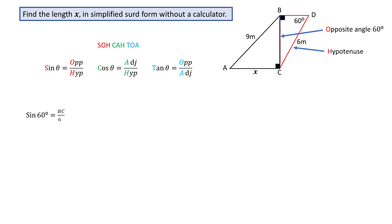Over the hypotenuse, the longest side, which is 6 meters. Multiplying both sides by 6 gives BC equal to 6 sin 60.